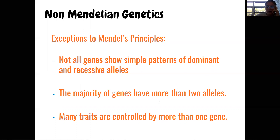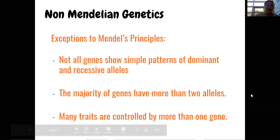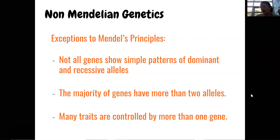The majority of genes have more than two alleles. If we're talking about the gene for hair color, you're still talking about that one specific gene regarding hair color, but there's a lot more than just two different types of hair colors. You've got brown, blonde, dirty blonde.